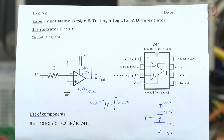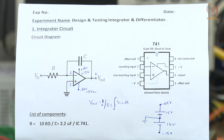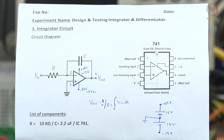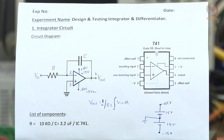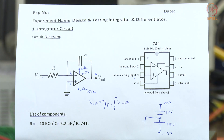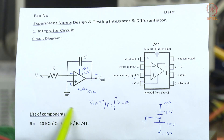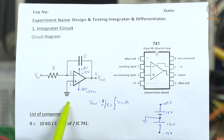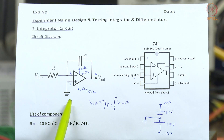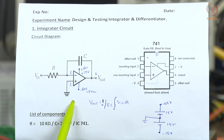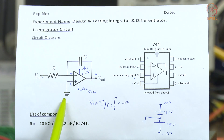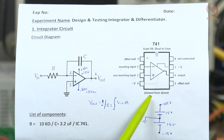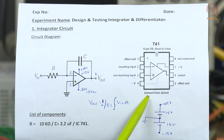In this video, we are going to see about the design and testing of integrator and differentiator. The circuit shown here is used for integrator and we are going to use one IC, that is an operational amplifier.